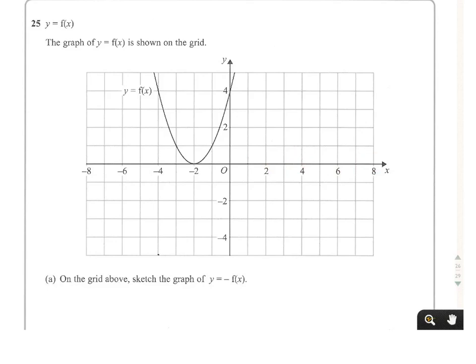So that will look something like this. I'll do a rough sketch. It goes through 4 here, so make sure it goes through minus 4 there. Make sure it touches on the x-axis. And as you sketch something like that, you'll be fine and you'll get all the marks. That's the first part done.